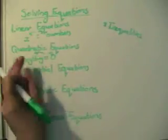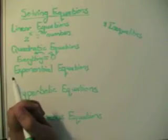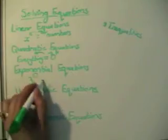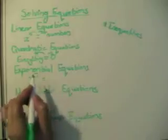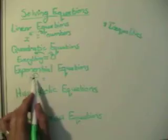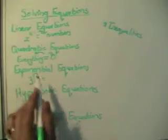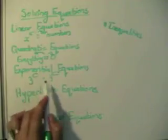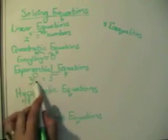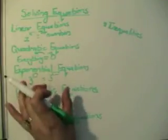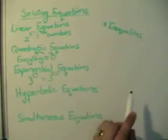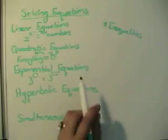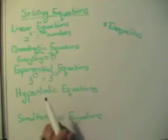For exponential equations, where x is in the exponent, the basic idea is to write both sides of the equal sign with the same base number. For instance, write everything as three to the power of something. Once both sides have the same base, you can set the exponents equal to each other, which usually gives you a linear equation - or sometimes a quadratic - that you then solve.